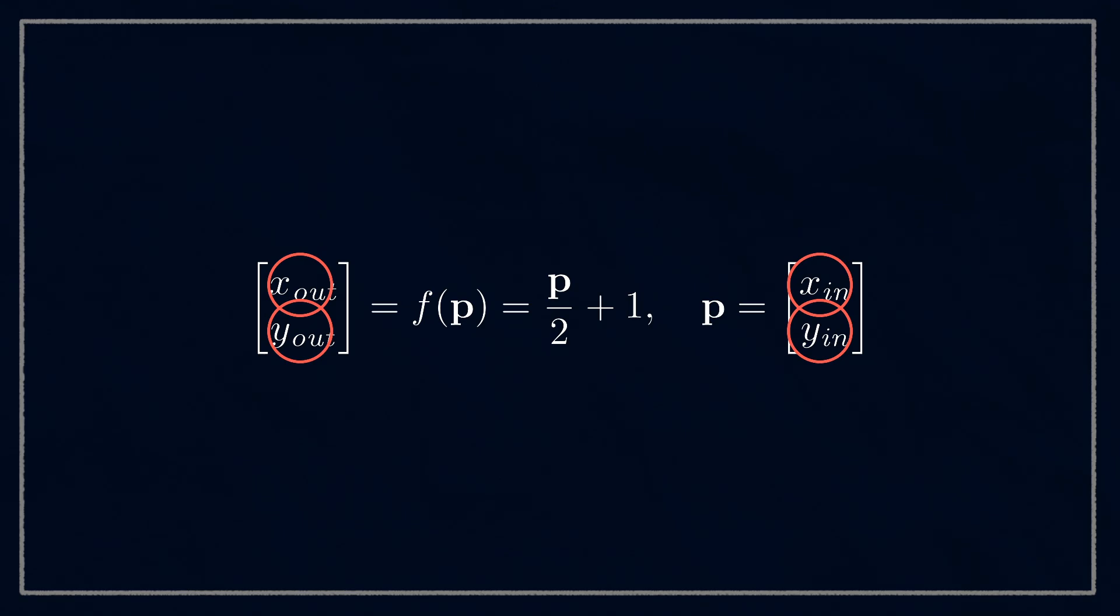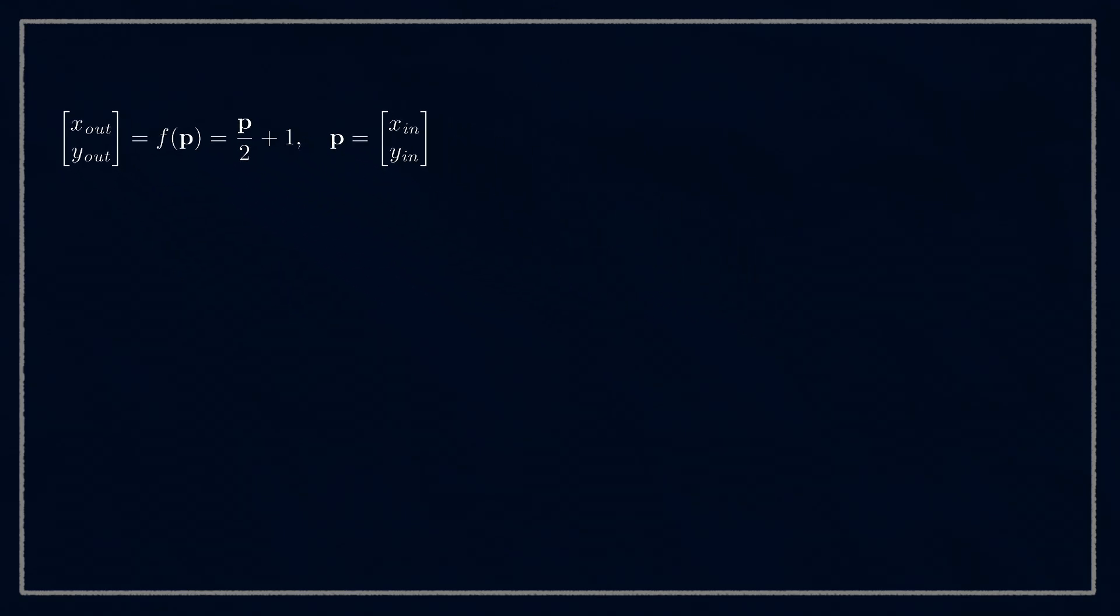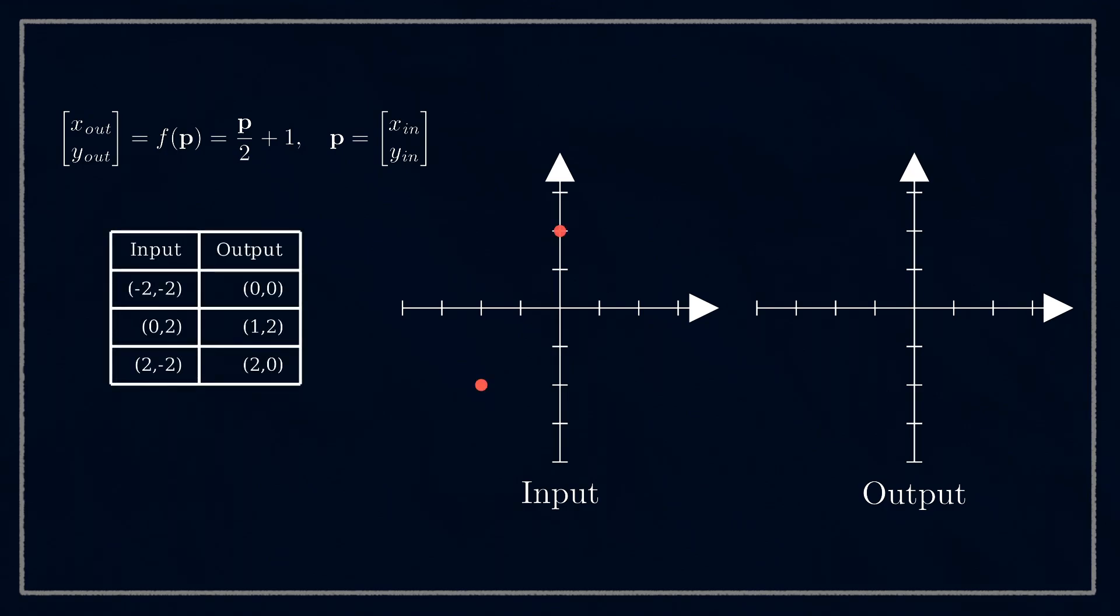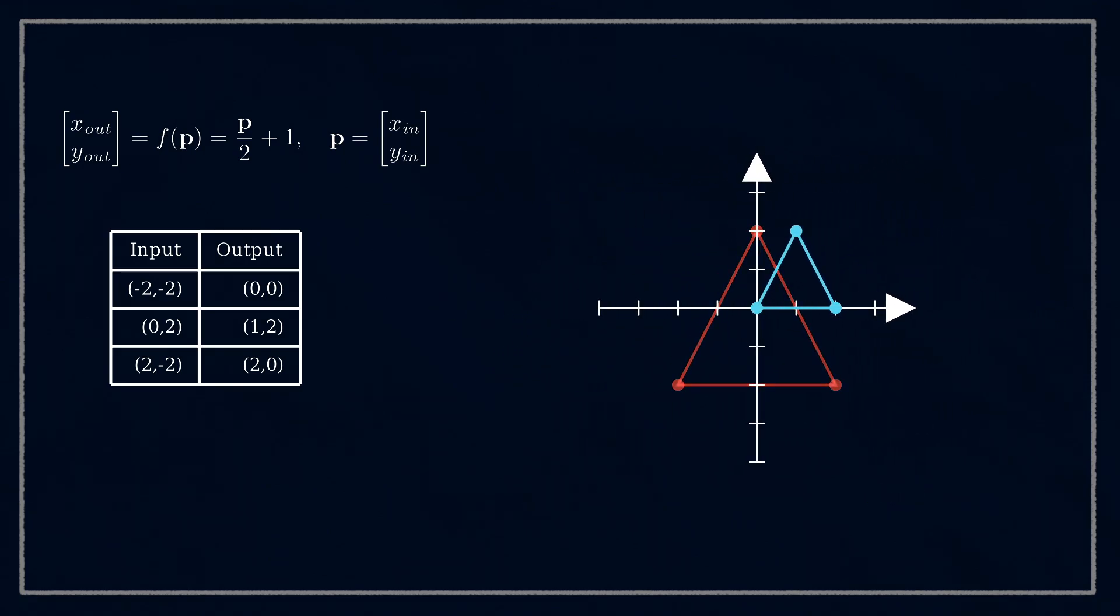So instead, we use the 2D version of that number line approach. We have a 2D plane representing the input, and another one representing the output. Like with the number line, we can plot some test points as an input, and then see where they land in the output space. To make things a bit more clear and concise, we usually plot these spaces on top of each other and use colors to differentiate them.